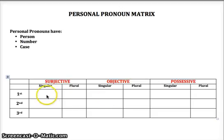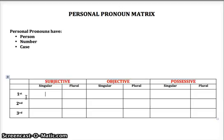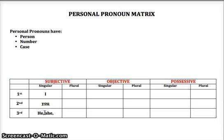We're going to complete this worksheet together, starting with subjective case pronouns. First person singular subjective case pronoun is I — for example, 'I went to the store.' Second person singular is you. Third person singular is he if the subject is a boy, she if the subject is a girl, or it if the subject is neutral. On the plural side: first person plural is we, second person plural is you, and third person plural is they.